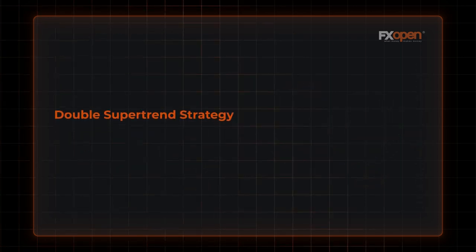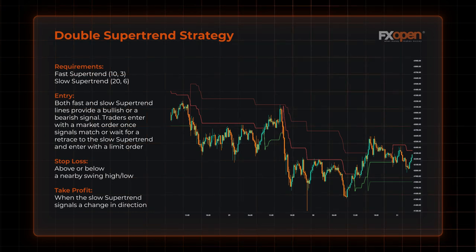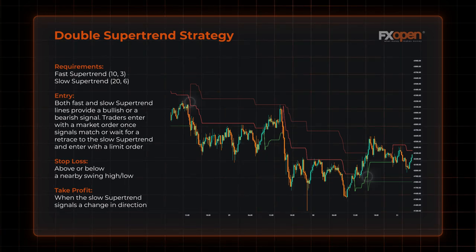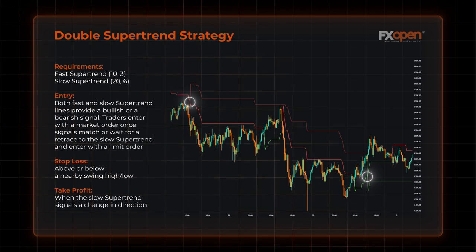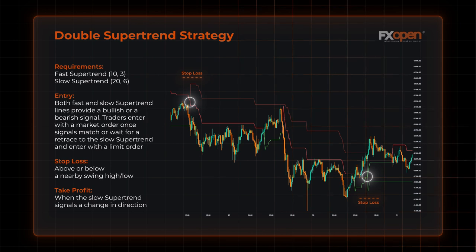Double Supertrend strategy. This strategy is based on two Supertrends with different settings to reduce the number of false signals. Traders use a fast Supertrend with lower settings, like ATR 10 and 3-factor multiplier, and a slow Supertrend with higher settings, like 20 and 6. Traders may enter with a market order once the market direction is confirmed by both fast and slow Supertrend lines, or wait for a retrace to the slow Supertrend and enter with a limit order. Stop-loss may be set above or below a nearby swing high or low. You may close the trade when the slow Supertrend signals a change in direction.